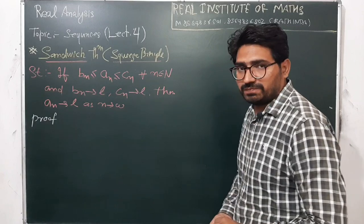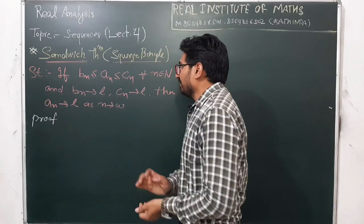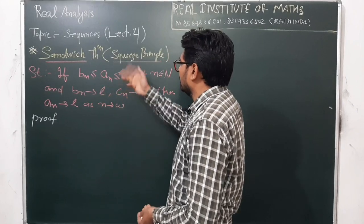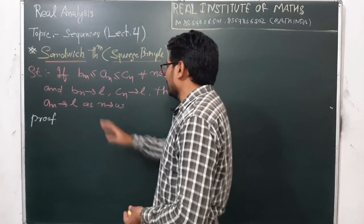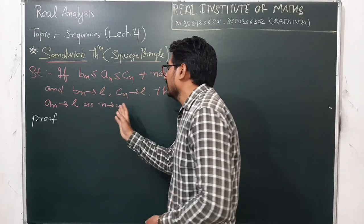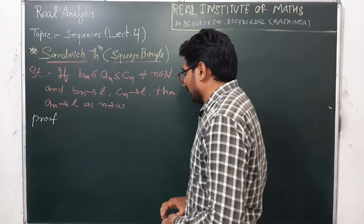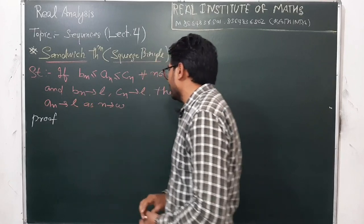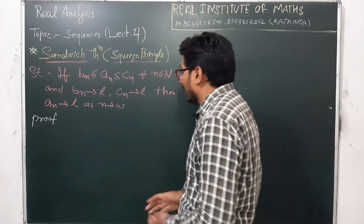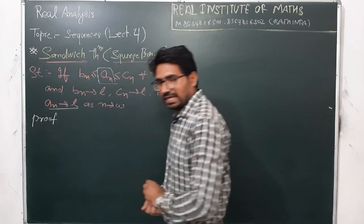So what is squeeze principle or sandwich theorem? If we have bn as a sequence, an as also a sequence, and cn, and all the terms of the sequence an lie between bn and cn, and we are given that bn approaches to l and cn approaches to l as n approaches to infinity, we are to prove that this middle sequence will also approach to l.